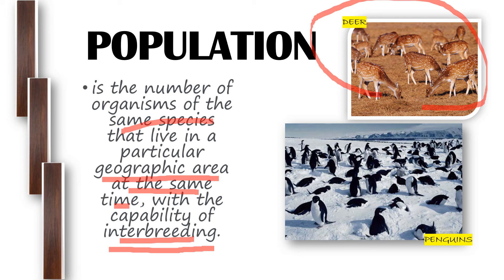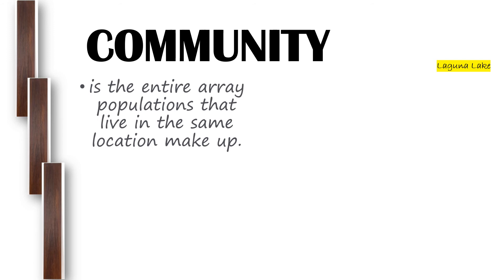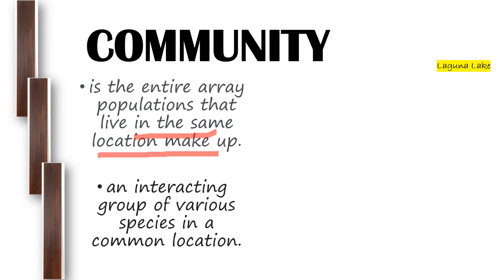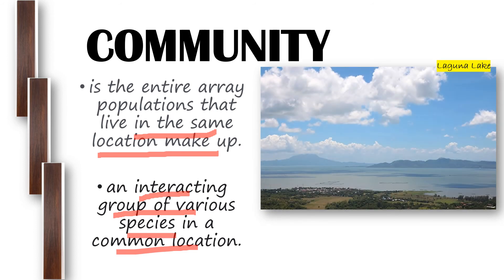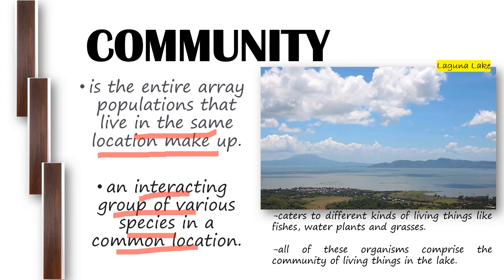Next we have community. A community is the entire array of populations that live in the same location, and it is also an interacting group of various species in a common location. For example, Laguna Lake caters to different kinds of living things like fish, water plants, and grasses. All of these organisms together comprise the community of living things in the lake.